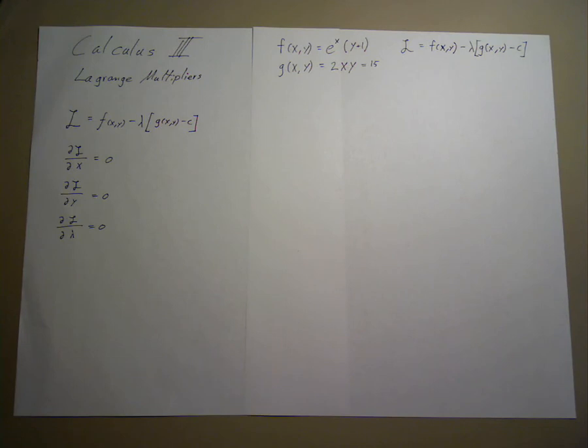This is particularly useful in the presence of a constraint. What makes this method particularly useful? In order to do this, we set up a system called Lagrangian.